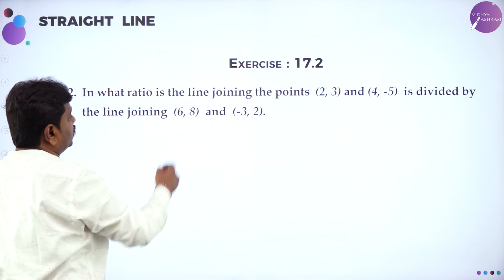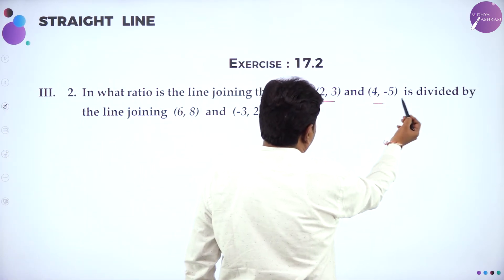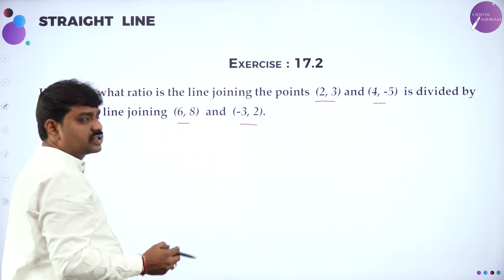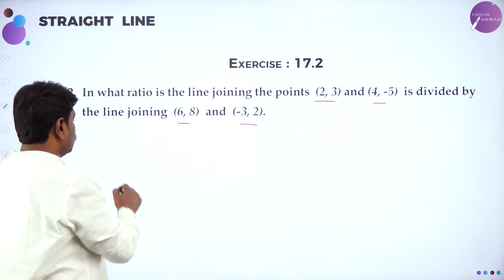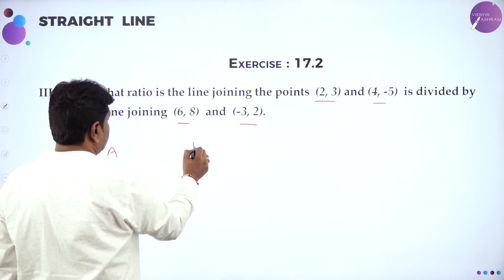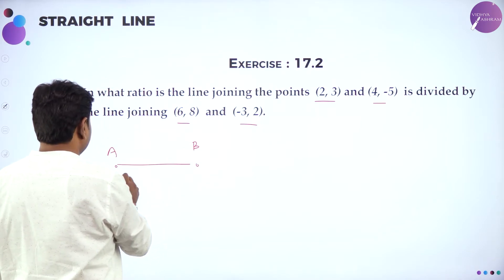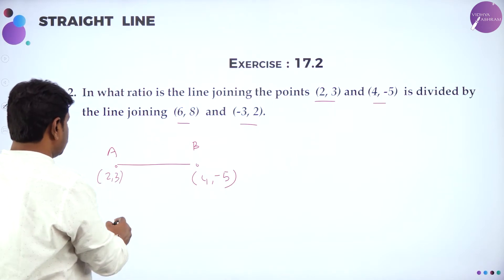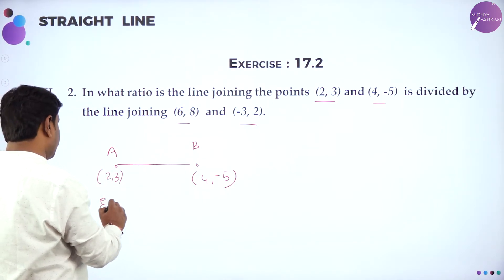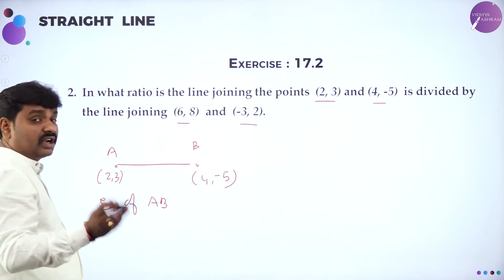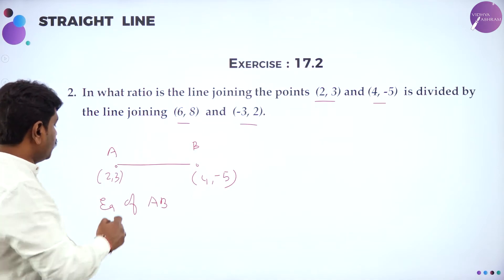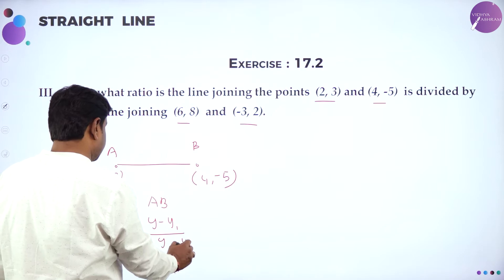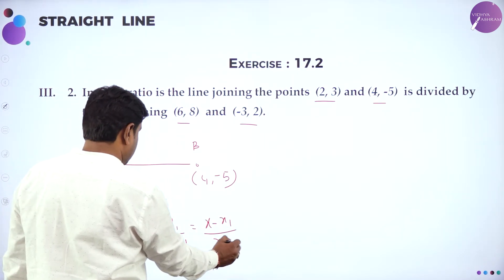Next, they give two lines: line AB joining points (2, 3) and (4, -5), and another line joining (6, 8) and (-3, 2). They ask for the ratio in which line AB is divided by the other line. To find the ratio, first write the equation of line AB using the two-point form: (Y minus Y1) divided by (Y2 minus Y1) equals (X minus X1) divided by (X2 minus X1).